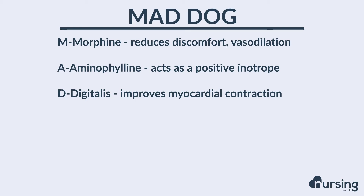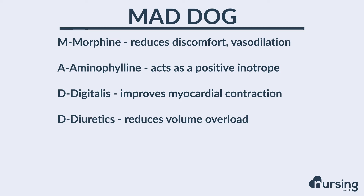D stands for digitalis or digoxin, which helps to improve myocardial contraction. The second D in DOG stands for diuretics. This helps to reduce volume overload and kicks out that extra fluid in the cardiovascular system and gets it out of the body, helping to reduce fluid accumulation in the lungs.